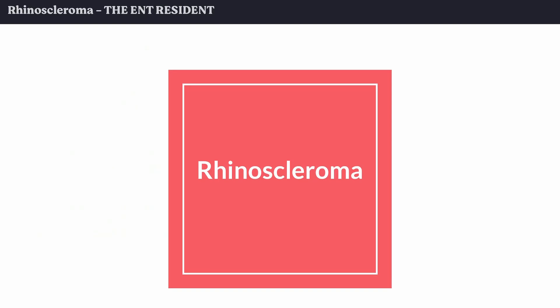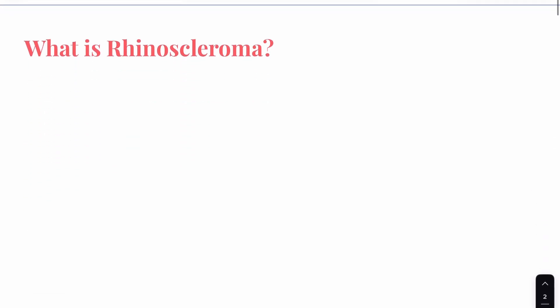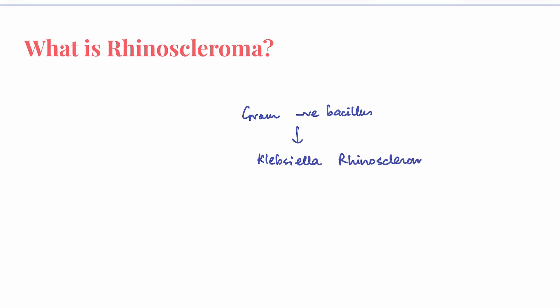Welcome back to the channel. Today's topic of discussion is a disease of the nose called rhinoscleroma. Rhinoscleroma is a chronic granulomatous condition of the nose caused by a gram-negative bacillus called Klebsiella rhinoscleromatis, which also has another name known as the Frisch bacillus.